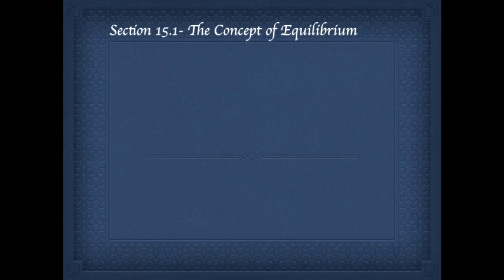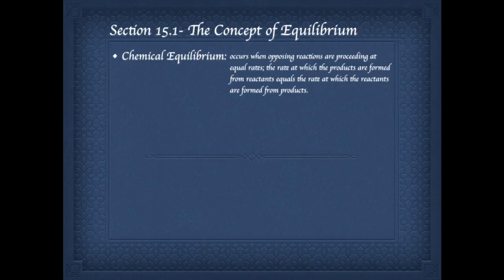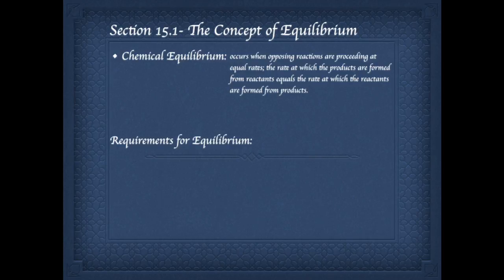In this unit we're looking at equilibrium specifically for chemical reactions — we call that chemical equilibrium. Chemical equilibrium occurs when opposing reactions are proceeding at equal rates. For chemical reactions, it's when the rate at which products are formed from reactants (the forward reaction) equals the rate at which reactants are formed from products (the reverse reaction). When those two rates are equal, you are in chemical equilibrium.